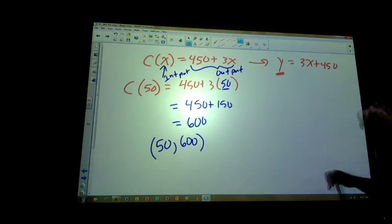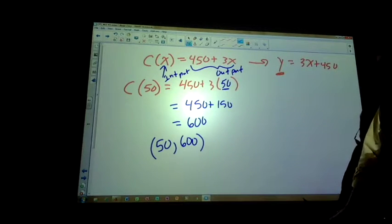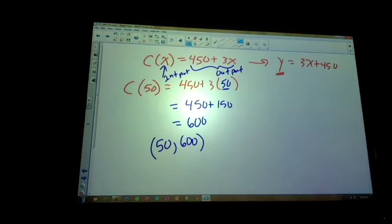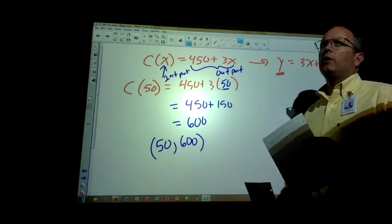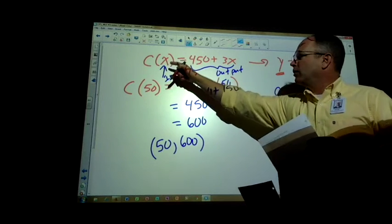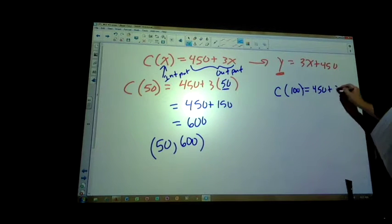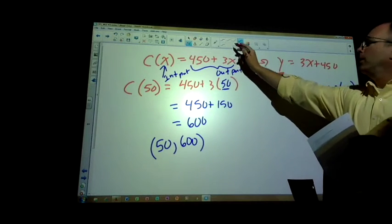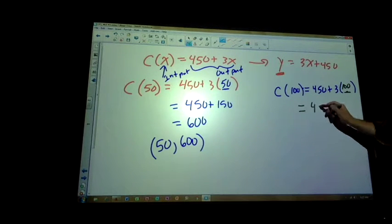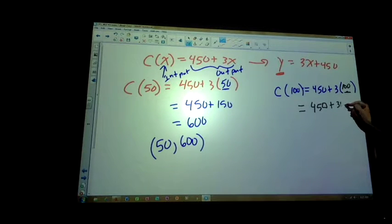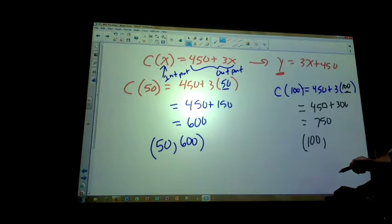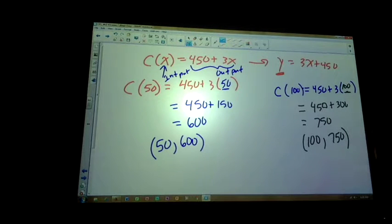Determine the output of the function when the input is 100. The input is this, and this gives me the output. Input, output. Feel okay? So what should I do with 100? It's the same thing. I'm going to plug 100 in rather than X.